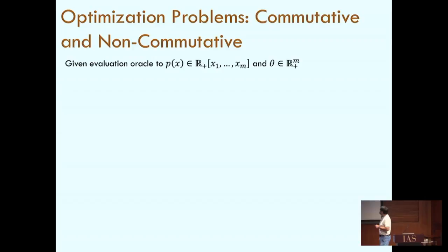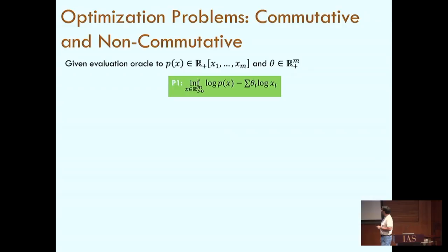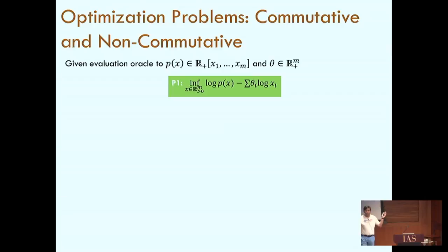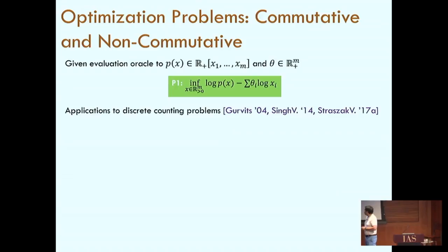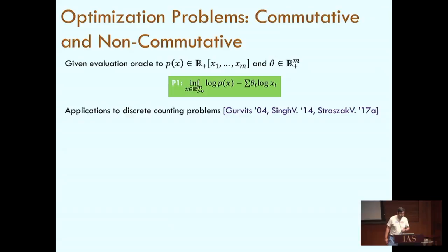The goal of problem one is to solve the following optimization problem. It looks strange, but to the audience here it should not. This is the log of the polynomial minus summation of theta_i times log of x_i, and you want to optimize this over the positive orthant — an infinite set going from zero to infinity in all positive directions. The interest in this problem emerges due to applications to discrete counting problems, going back to works of Leonid Gurvits and more recently some of my work with my student Damien Straszak and collaborator Mohit Singh.